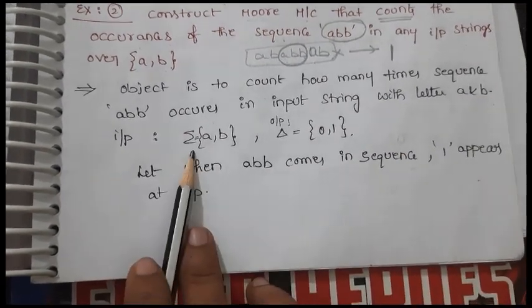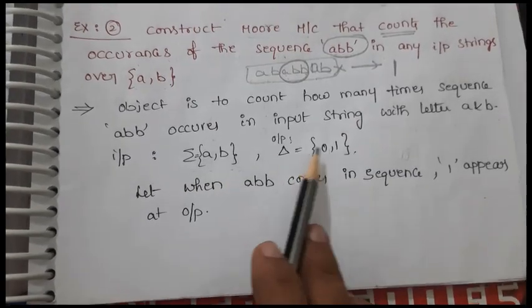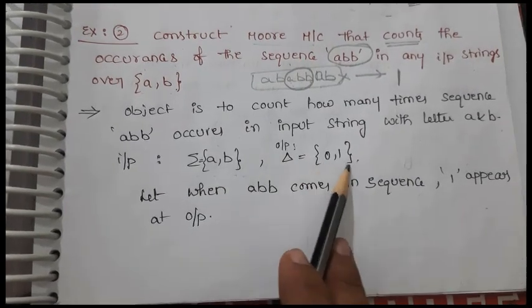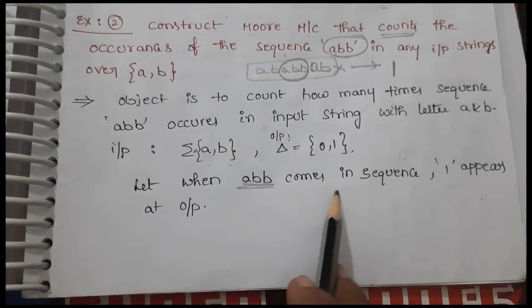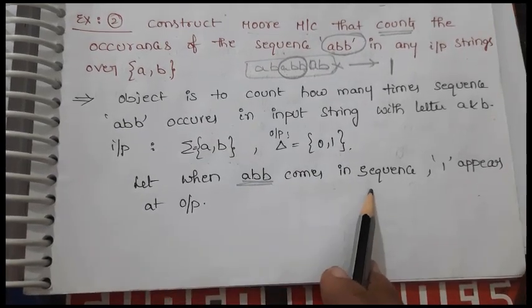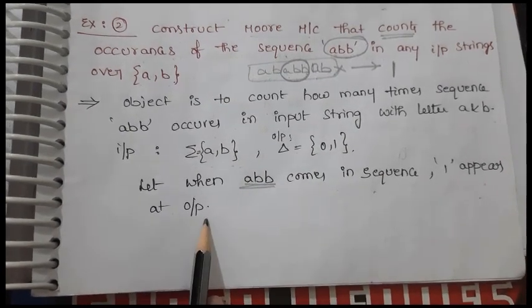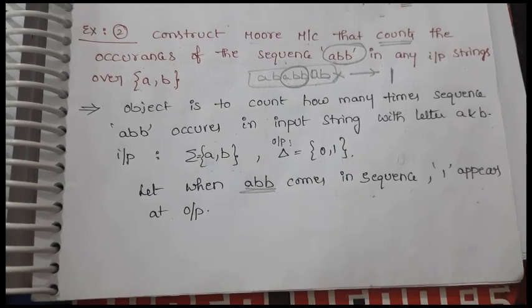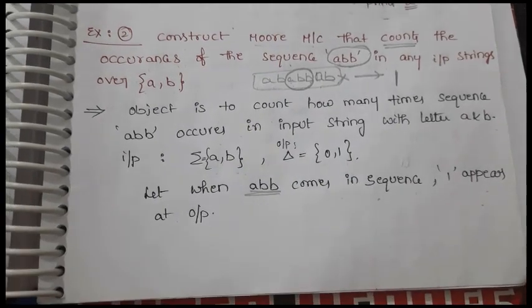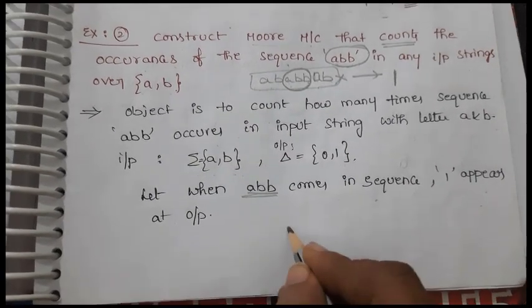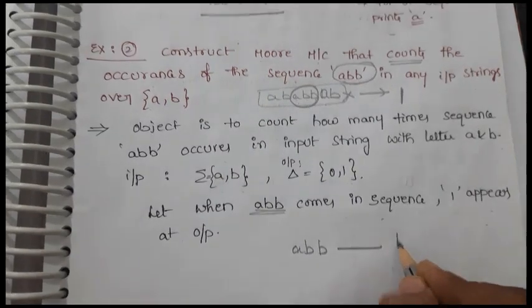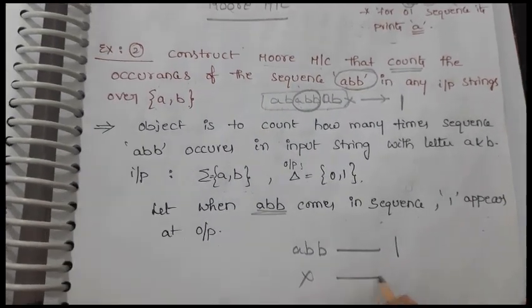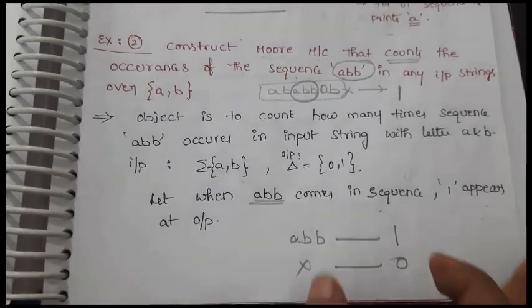Our input set will be {a, b} and outputs are {0, 1}. The objective is: whenever the sequence 'abb' appears in the input, the output is 1; otherwise the output is 0. That is how we construct this Moore machine.